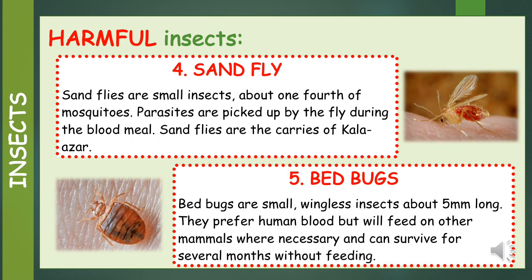Number 4: Sandfly. Sand flies are small insects, about one fourth the size of mosquitoes. Parasites are picked up by the fly during the blood meal. Sand flies are the carriers of Kala Azar.